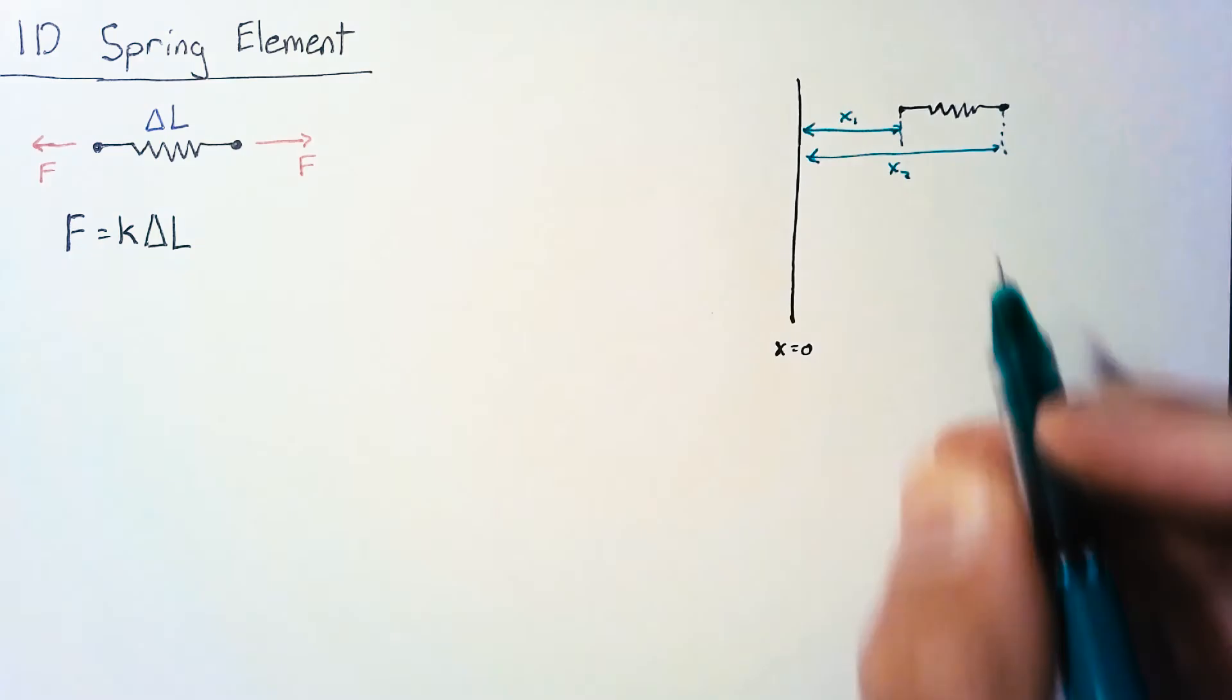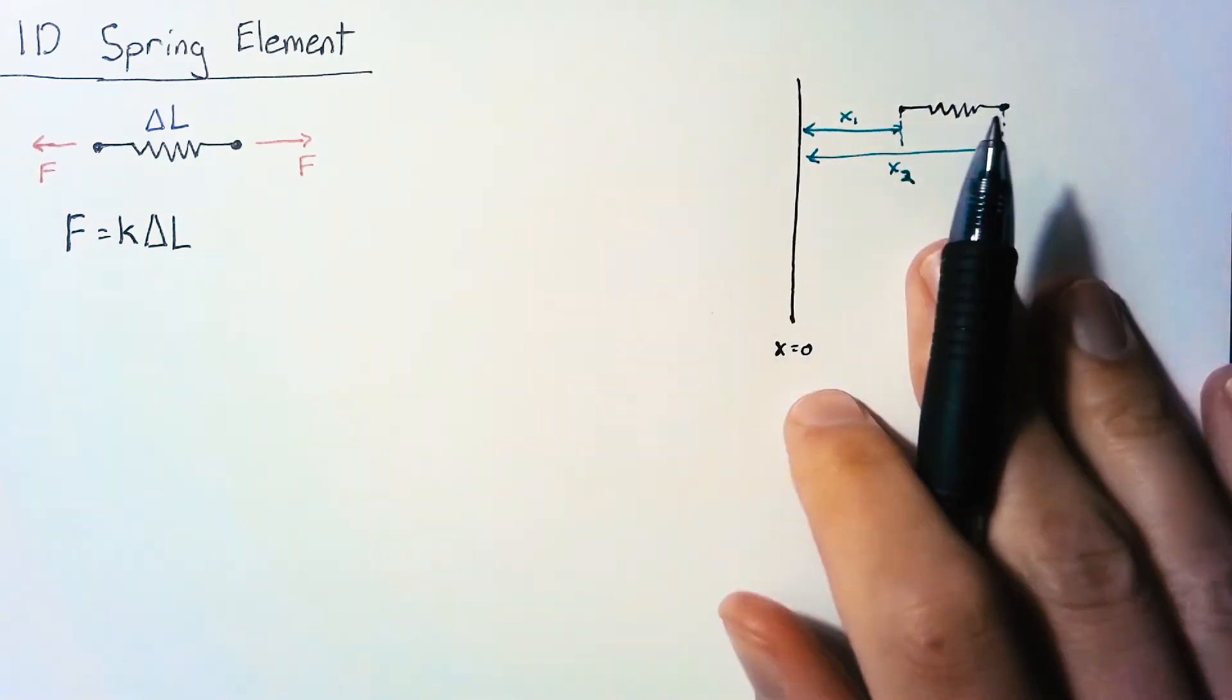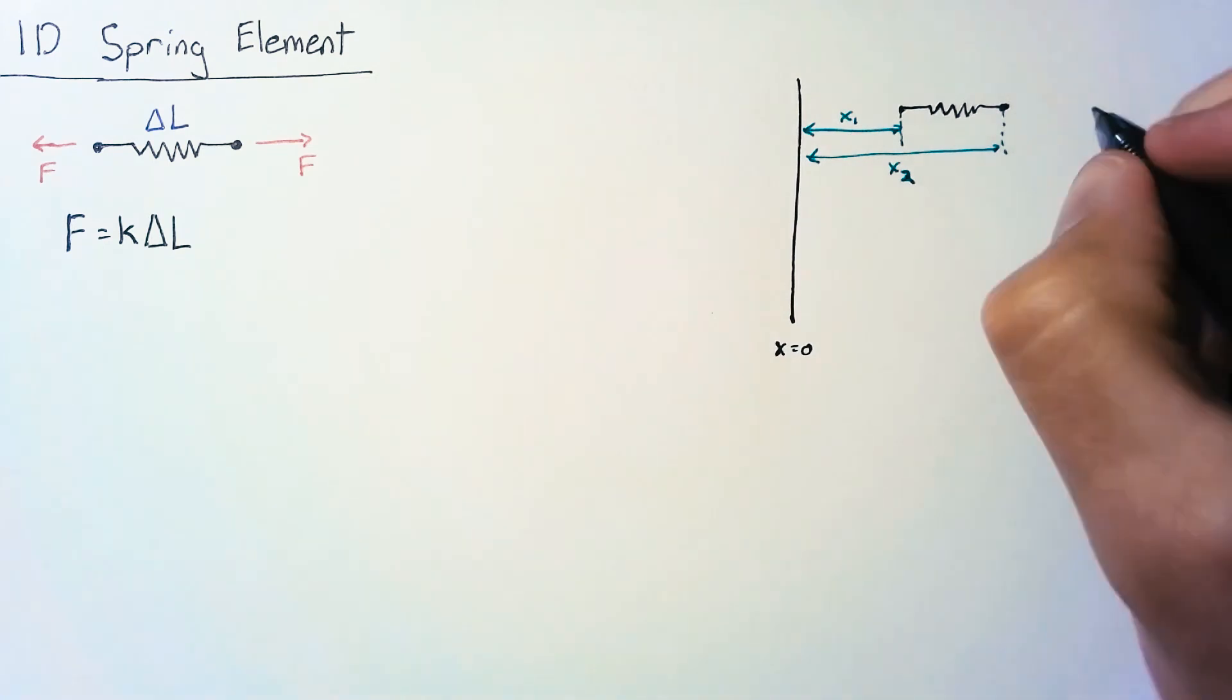So we're going to call these two endpoints x1 and x2. Now at this point we haven't applied any forces yet and so this is going to be the undeformed state of the spring.